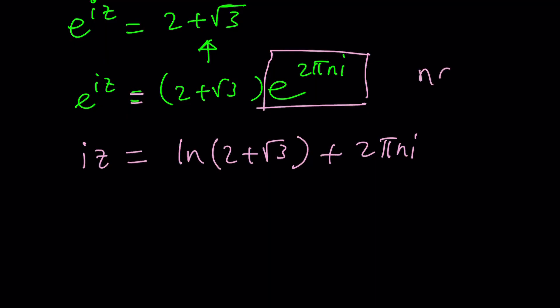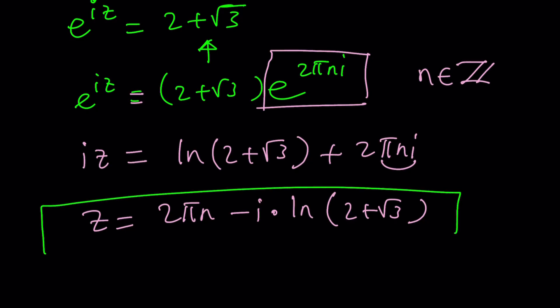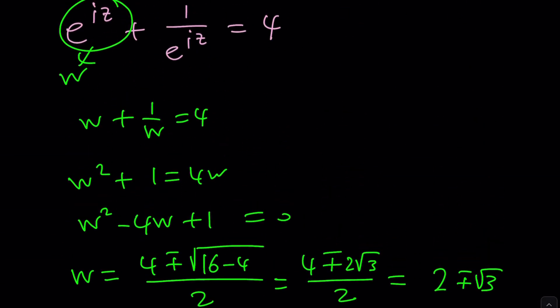By the way, I forgot to say n is an integer. Then we can multiply everything by negative i. When we do here, that's going to give us negative i squared, which is 1. We're going to get z equals 2 pi n minus i times ln 2 plus root 3. What is ln of 2 plus root 3? It's a real value of ln, so it should be good, because 2 plus root 3 is real and greater than 0. So we got one of the solutions. The other one should be pretty similar to this one.